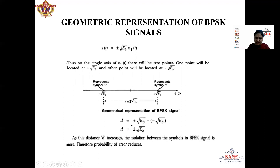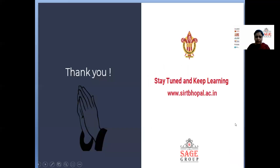When the distance d increases, the isolation between the two symbols in the BPSK signal also increases. In that case, the probability of error reduces because the possibility of overlapping of the two signals also reduces. This is all for today's lecture. Thank you.